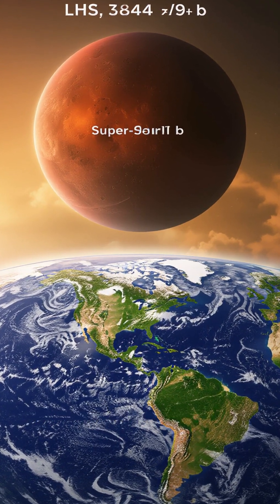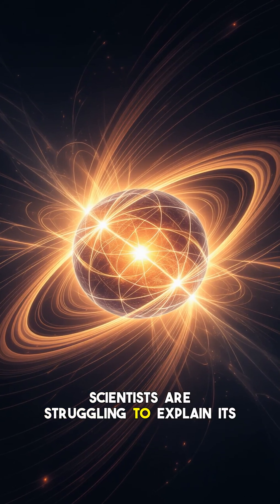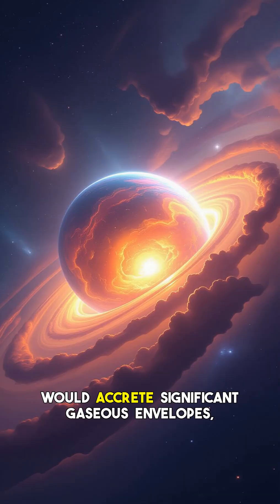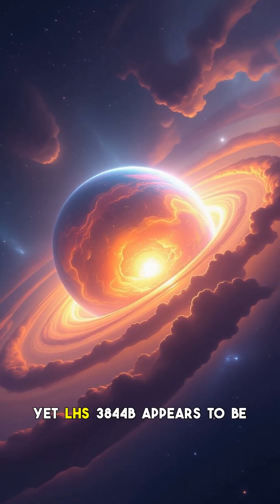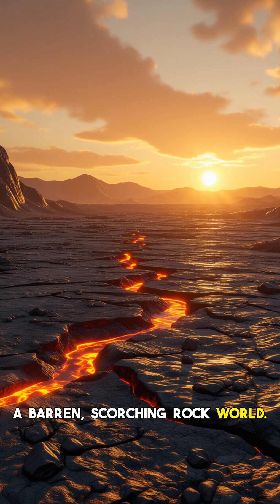But here's the impossible part. Its density, it's so incredibly dense, scientists are struggling to explain its formation. Typically, planets of this mass and near a star would accrete significant gaseous envelopes, becoming mini-Neptunes. Yet LHS 3844b appears to be almost entirely solid, a barren, scorching rock world.